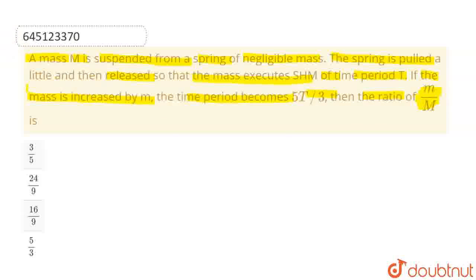So, we are told that initially there was a spring with spring constant k and a block of mass capital M attached. The time period is T which is nothing but 2π√(M/k). This is the time period of spring mass system.